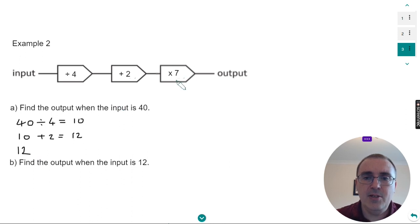The final operation is to times it by seven. So 12 times seven is 84. So 84 is the output.